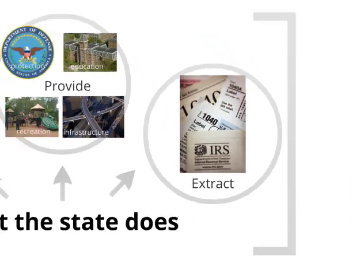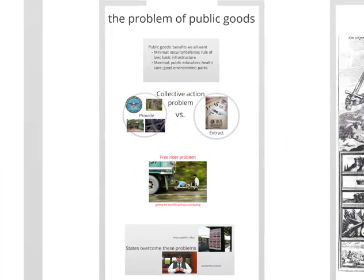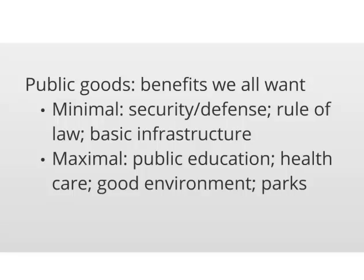Now let's consider why we have a state in the first place. We have states to provide public goods and to overcome collective action problems in providing those goods. A public good is something good that we all want, and the public part means it's not excludable — one person can't hoard it all. Examples include safe bridges, clean air, and clean water. There are two broad classes: minimal public goods like security, and maximal public goods like education and health care.